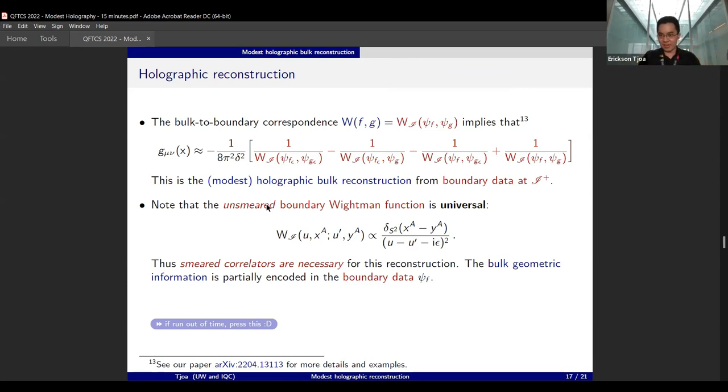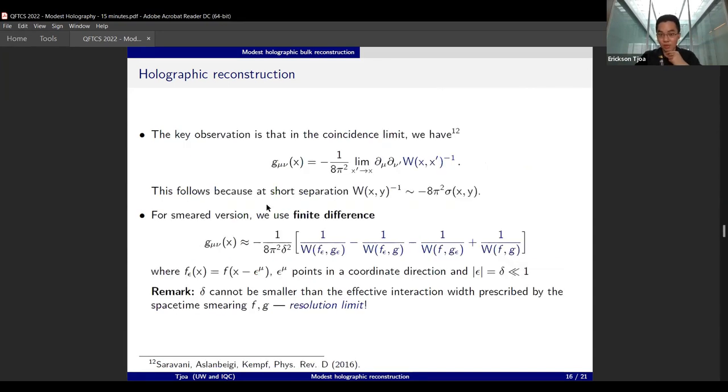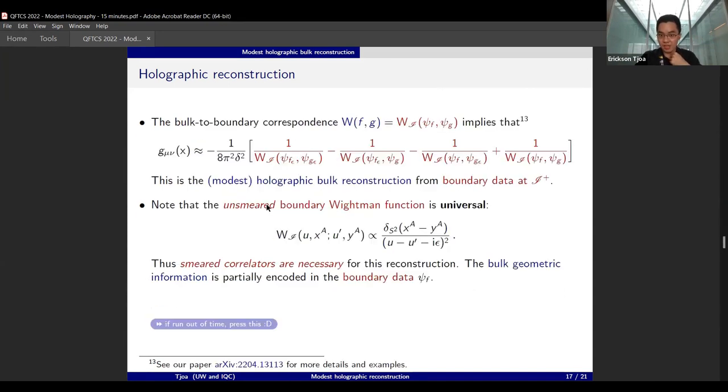This is really what we propose as a modest holographic bulk reconstruction from the boundary data at scri plus. It is modest just because it is not really the kind you see in AdS/CFT. Note that here you can see the power of the algebraic version: unlike the previous slide where you can work with unsmeared bulk Wightman function, here you cannot do it because the unsmeared version is universal, as we expect from scri plus. Really, this reflects the fact that a lot of the bulk geometric information gets carried by the causal propagator.